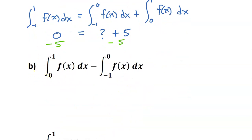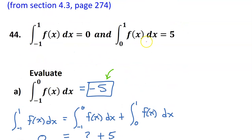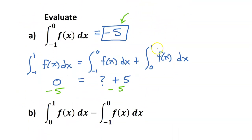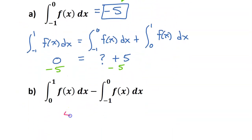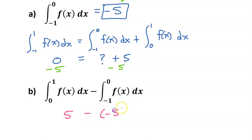For part B, we have the integral from 0 to 1, which we already know is 5. So we have 5 minus the integral from negative 1 to 0. That's what we just found in part A, which is negative 5. So that gives us 5 minus negative 5, which is 10.